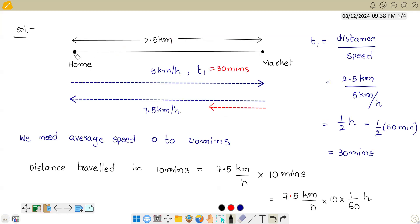Again, I will repeat how we have solved. This is the given question. There is a home, market, and the distance is 2.5. He is traveling forward with a speed of 5 km per hour, backward with 7.5 km per hour. Using time equals distance by speed, I found the time required for the forward journey. 30 minutes is required to complete this forward journey, but we need average speed only from 0 to 40 minutes.